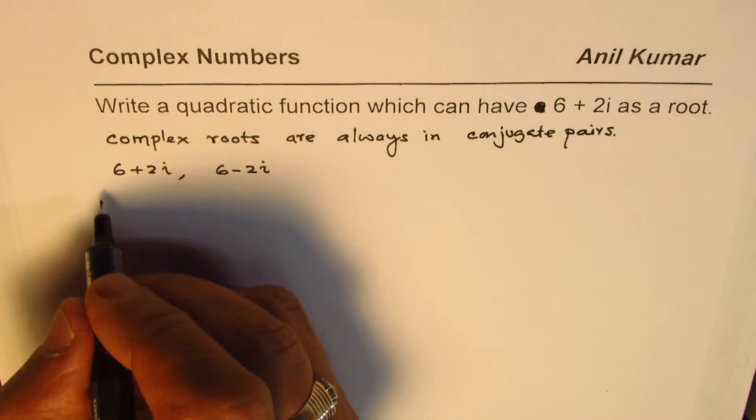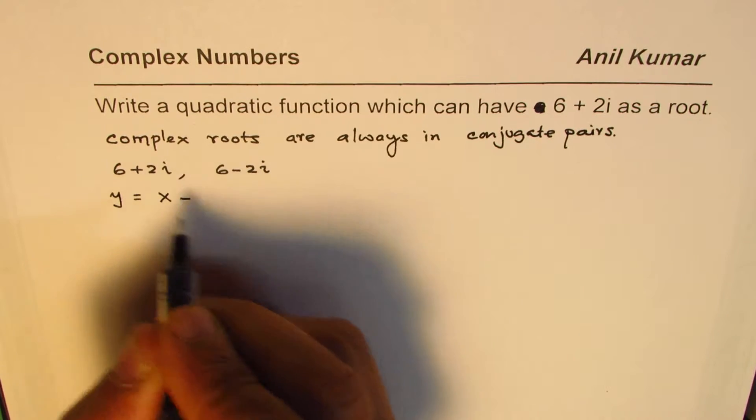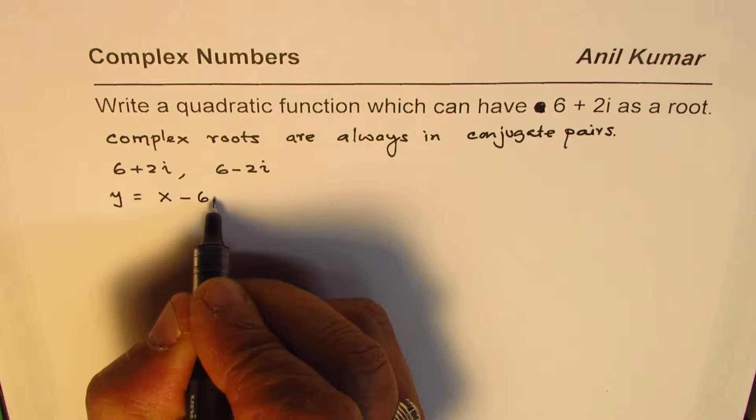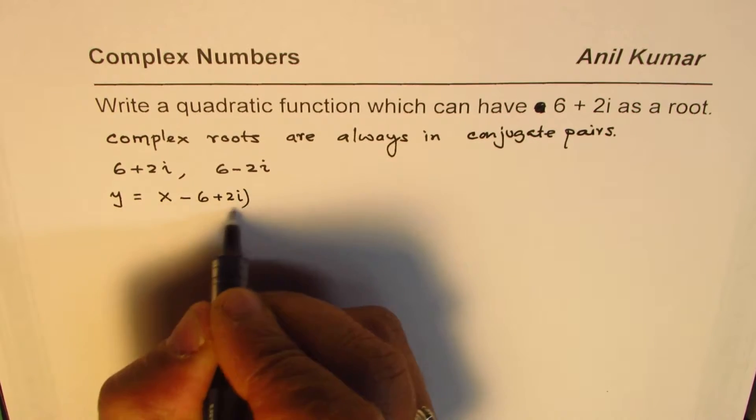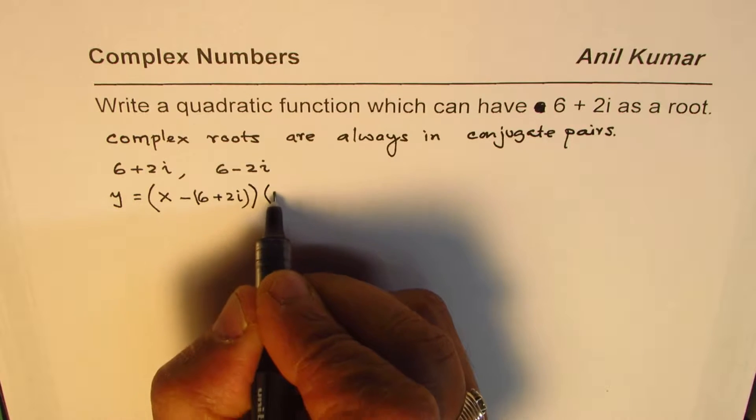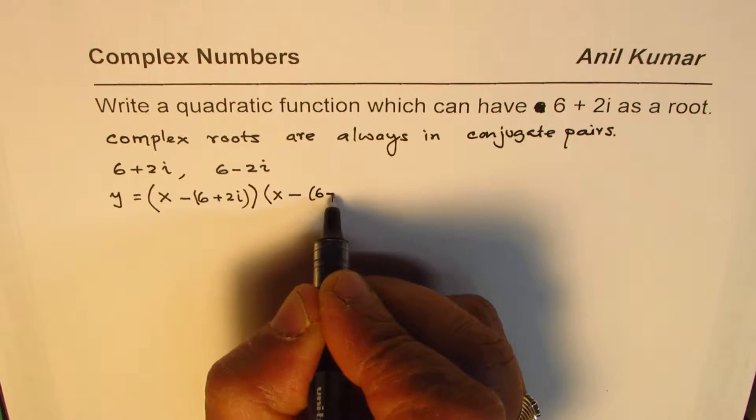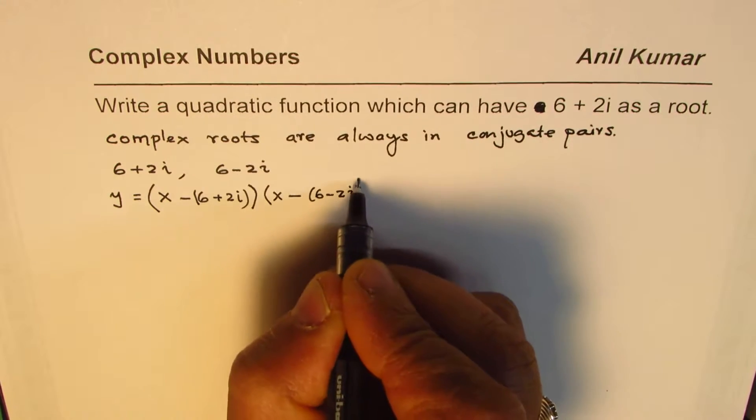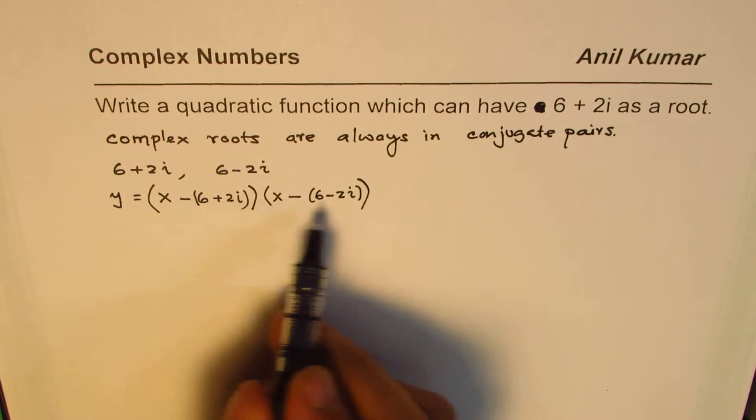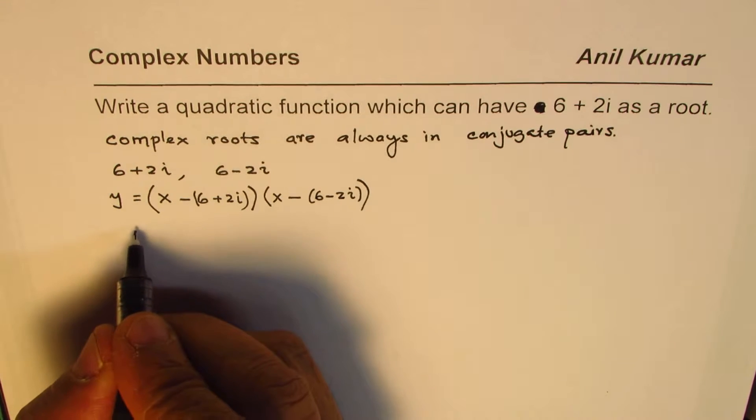Now, that quadratic function, let us say y, can be equal to x minus first root which is 6 plus 2i, right? So, that becomes the first factor times x minus the other root which is 6 minus 2i. Now, we can expand and simplify this to get the quadratic equation. Now, this is one method of finding quadratic equation. So, let us do it.